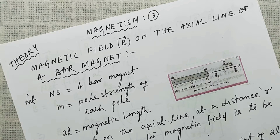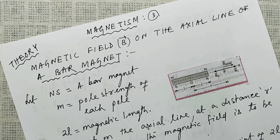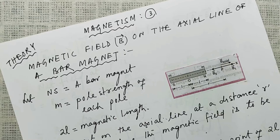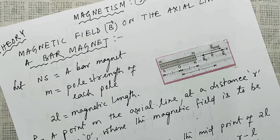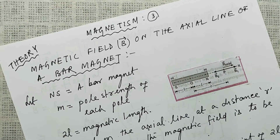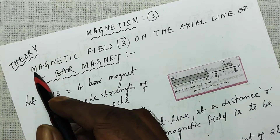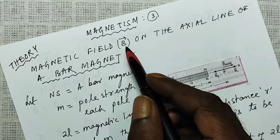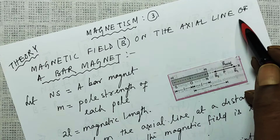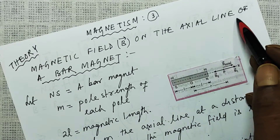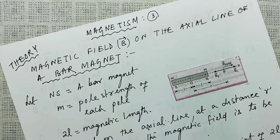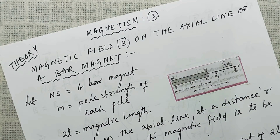Okay, Magnetism lesson 3. It is a theory derivation. What we will be finding out is the magnetic field B on the axial line of a bar magnet.